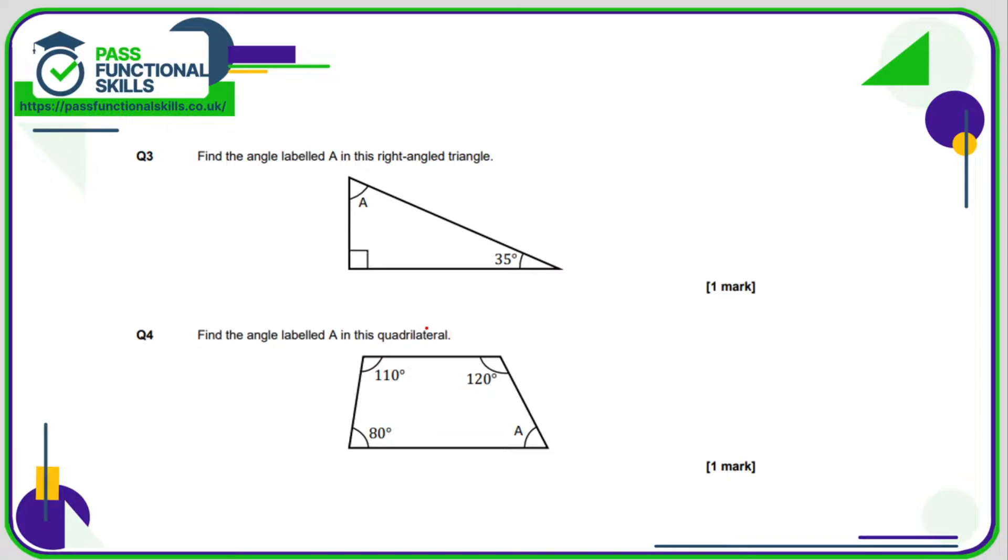Question three, still no calculator. This angle here is a right angle, so that's 90 degrees. 90 plus 35 equals 125. We need to subtract 125 from 180. 10 minus 5 is 5, and 7 minus 2 is 5. So this angle is 55 degrees.